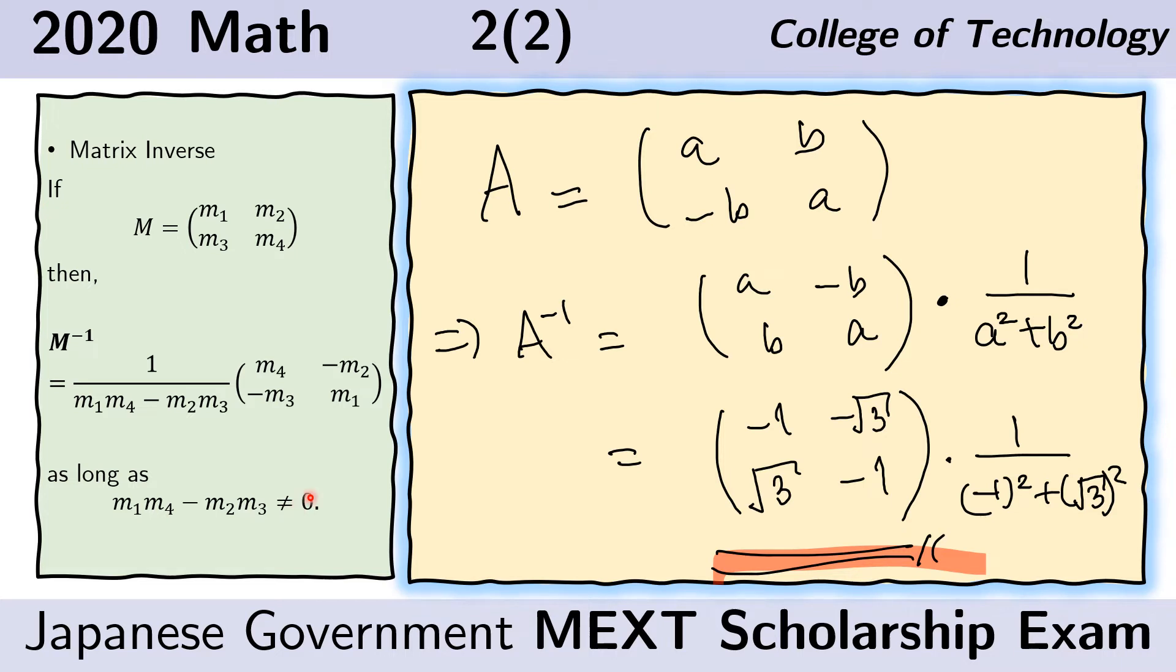For the given matrix, we can just switch A and A which gives us again A and A, and we put a negative sign in front of this which gives us this, and in front of this which gives us this.